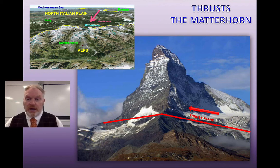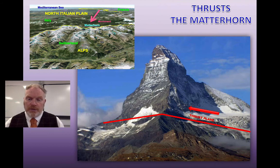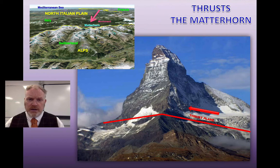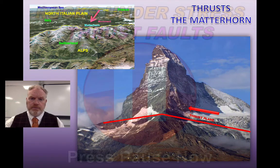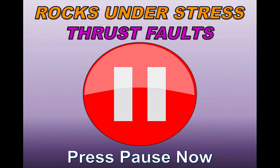The Matterhorn is formed by a thrust fold where the hanging wall, which forms the top of the mountain, has been pushed up on top of the foot wall to create this spectacular peak. So press pause now, have a go at question nine, and see what you come up with.